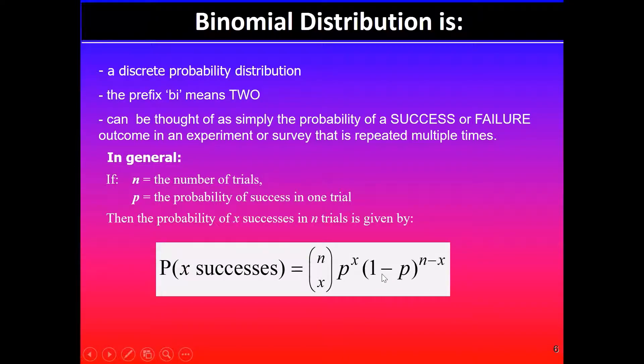Now 1 minus p is the failure, because the total probability will always add to 1. So if I'm saying probability of success is p, then 1 minus p is the probability of failure, raised to the power of n minus x.